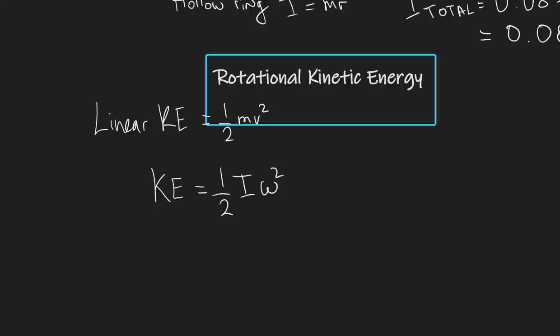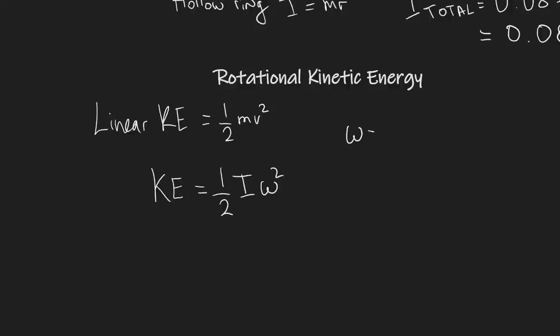The angular speed ω is equal to the angular displacement Δθ divided by Δt. This equation is not given in the exam — we need to remember it. Angular speed is measured in radians per second, since the SI unit for angular displacement is radians and for time is seconds.